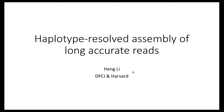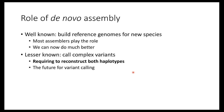I think everyone here knows what de novo assembly is. It's well known that we use de novo assembly to build reference genomes for new species, and most existing assemblers can play this role. But what is not well known is that de novo assembly is also the ultimate solution to calling complex structural variants. For this role, it requires reconstructing both haplotypes — and this is where our contribution comes in.